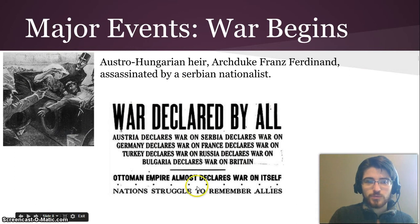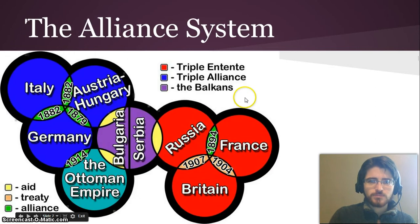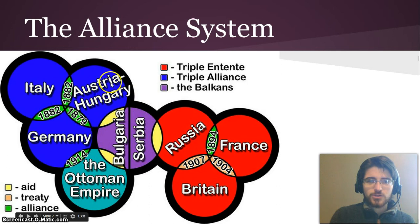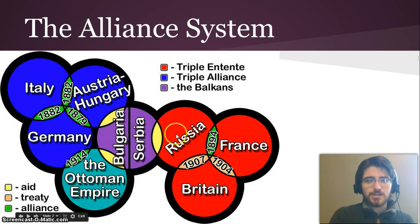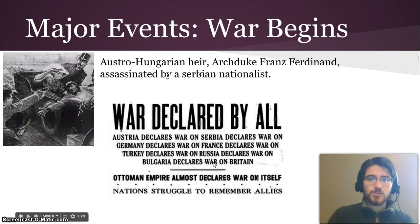This is an actual newspaper clipping depicting that event, where Gavrilo Princip assassinated the Archduke. Because Serbia killed Austria-Hungary's heir, Austria-Hungary goes to war with Serbia, which pulls in Russia, which pulls in Germany to help Austria-Hungary, which pulls in Italy, which pulls in France and Britain. And all of a sudden, all of Europe is fighting one another.